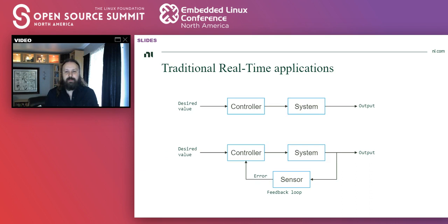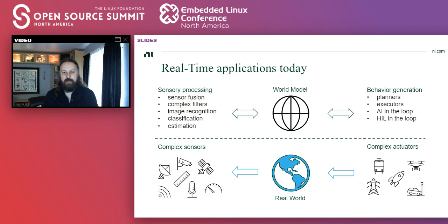Traditional real-time applications tend to be pretty simple things — you usually have a desired value you're trying to control, sometimes open-loop control, sometimes closed-loop if you have a sensor. But real-time applications in today's world have become complex things that involve autonomous driving, landing rockets, and controlling smart grids at the country level. You have complex actuators and complex sensors like cameras, GPS, and radar; you have to do sensor processing, complex filters, image recognition, and so on. Oftentimes within your real-time application you have to construct a model of the world, and you have planners and executors, and oftentimes AI and ML in the loop, or hardware in the loop.